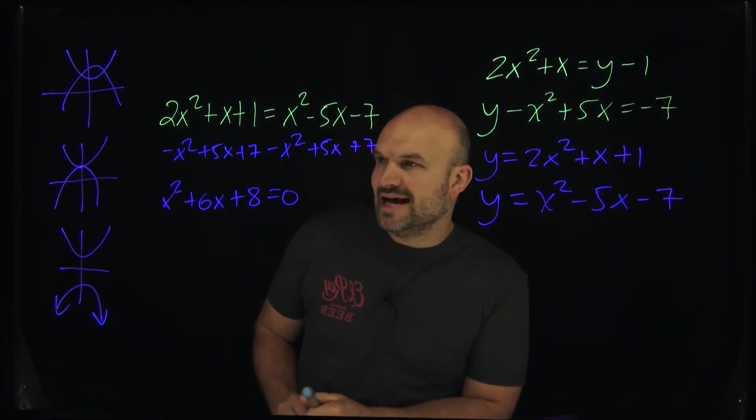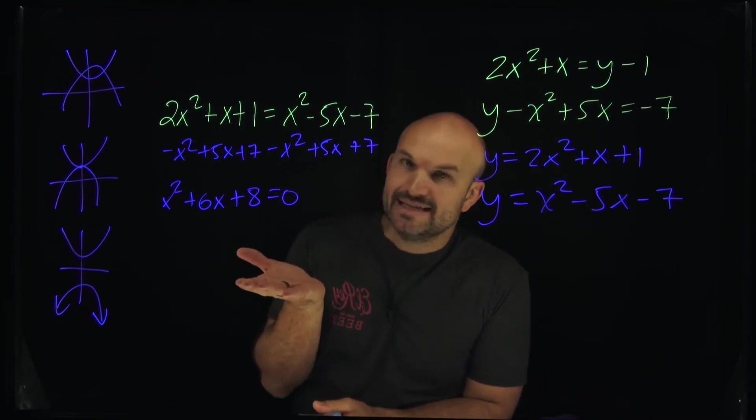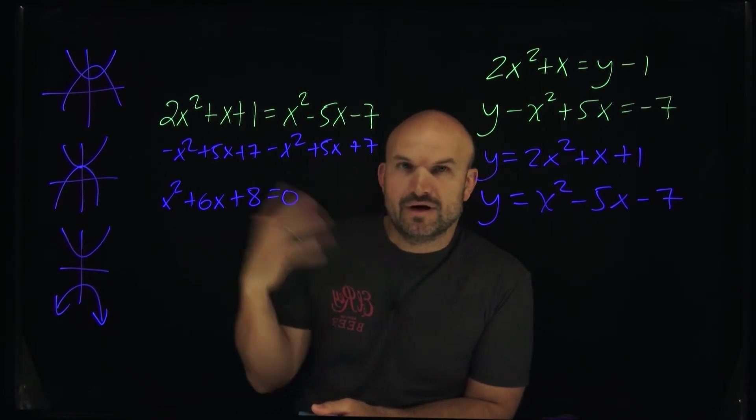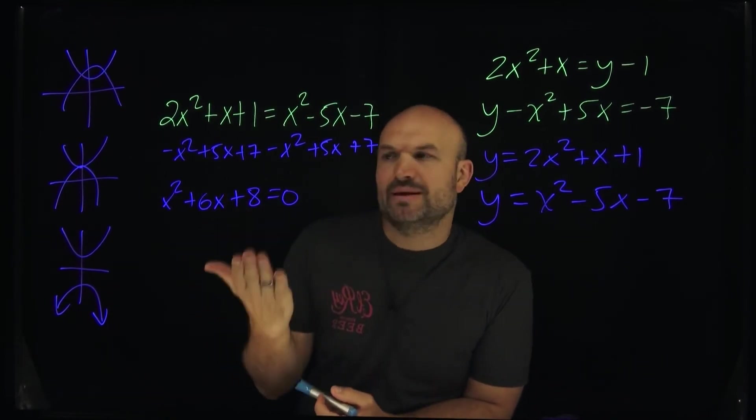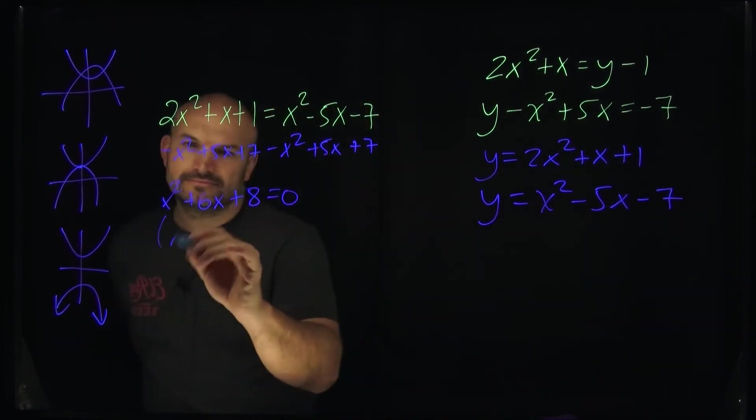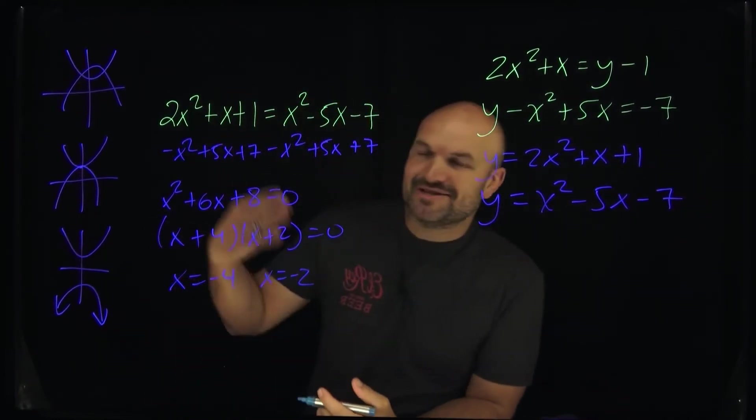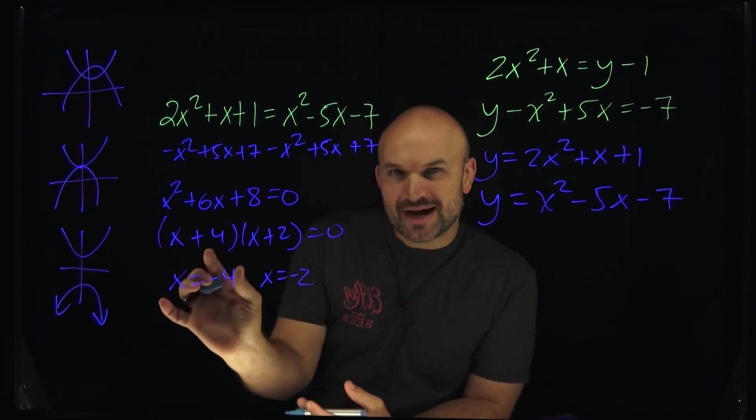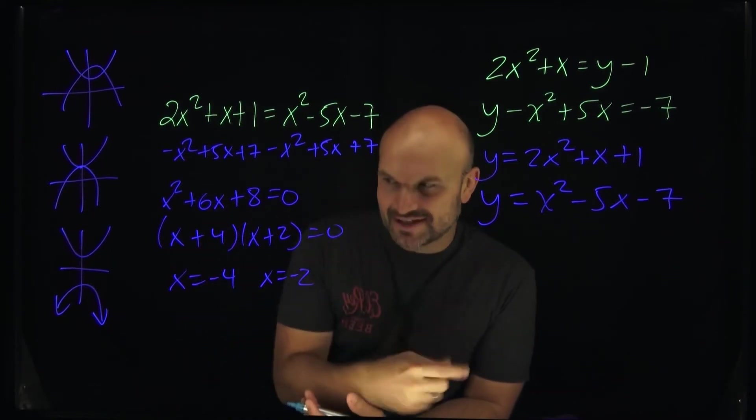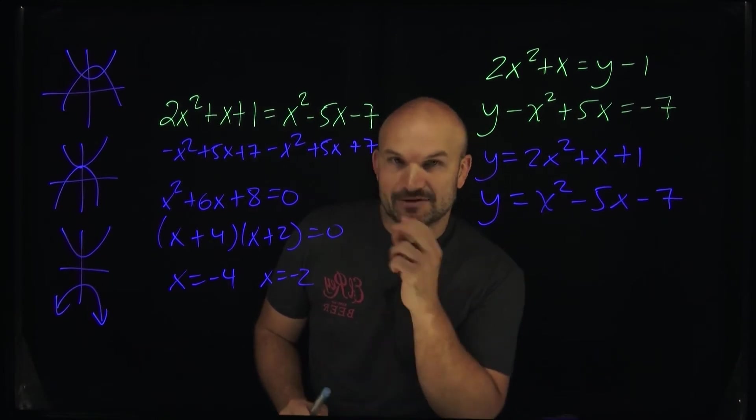So now you can see that I have a quadratic equation, X squared plus 6X plus 8, and now what I need to ask myself is what two numbers multiply to give you 8 and then add to give me a 6. Well, obviously, I know 4 and 2 multiply to give me 8, and they add to give me 6. So therefore, those are going to be my two factors. But once you apply the zero product property of setting each factor equal to zero, then you can see my two solutions are going to be X equals negative 4 and X equals negative 2.